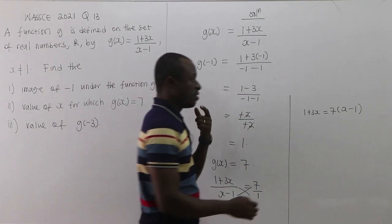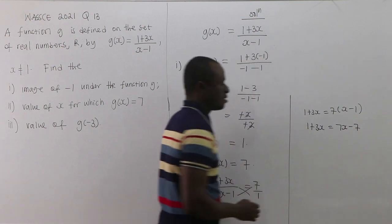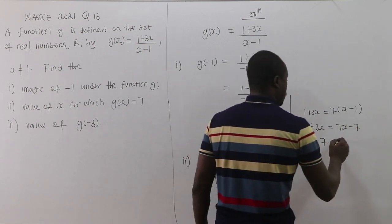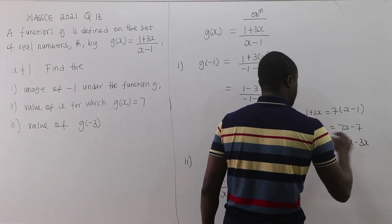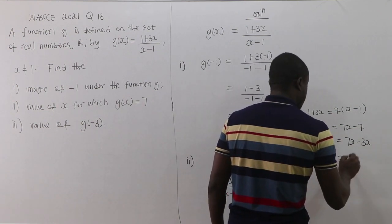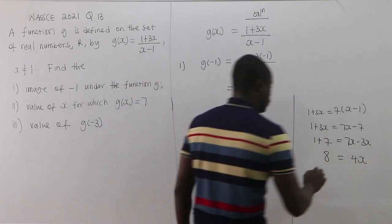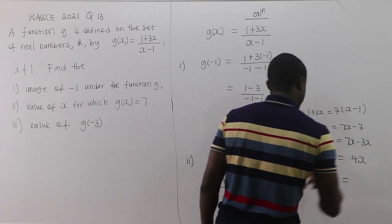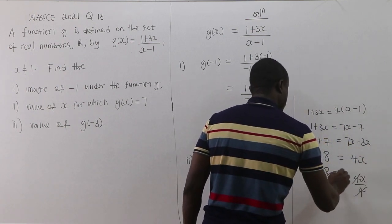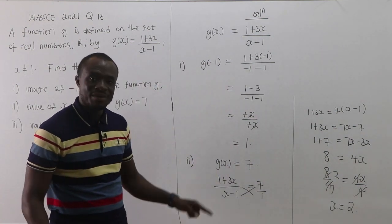Expanding the right-hand side: 1 + 3x = 7x - 7. Grouping like terms: 1 + 7 = 7x - 3x, which gives 8 = 4x. Dividing both sides by 4: x = 2. That's very easy.